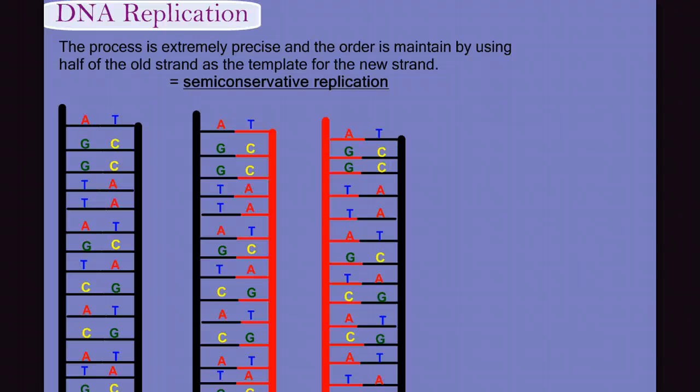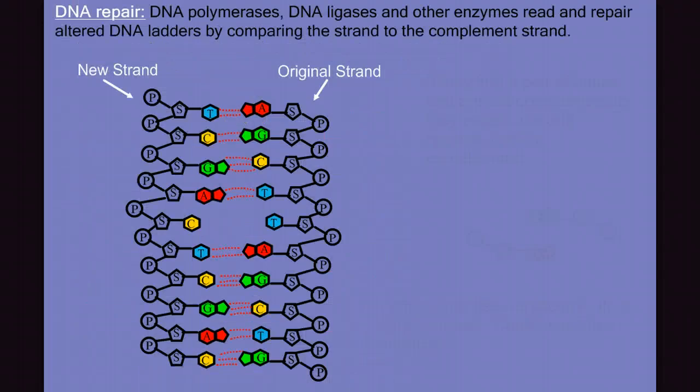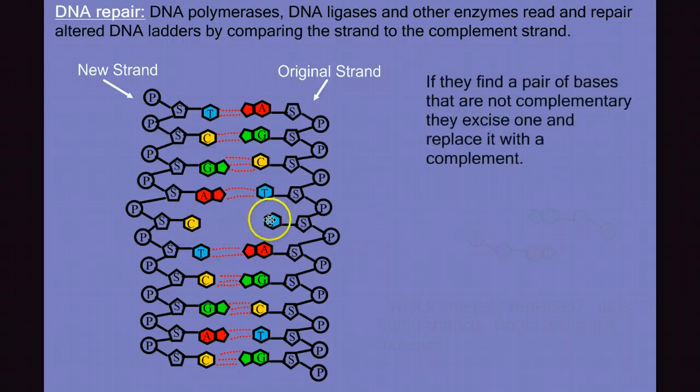It turns out that after replication is complete, there's a proofreading step where enzymes check each base pairing to make sure that they're complementary. If they find a mistake, like we see here, the enzymes will cut out and replace one of these nucleotides in order to make this rung of the ladder a complementary base pair. However, there's two ways to correct this mistake. I could take this T out and replace it with a G, or I could take the C out and replace it with an A. Think about what the difference is.